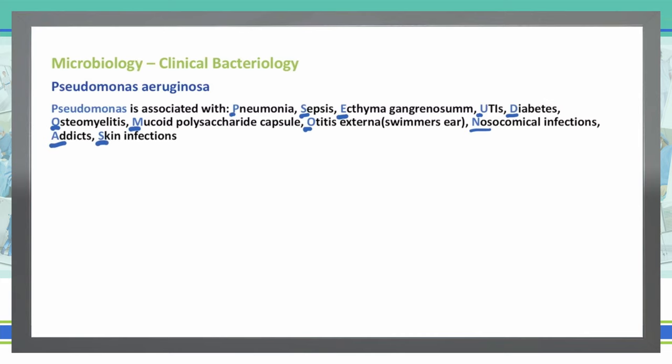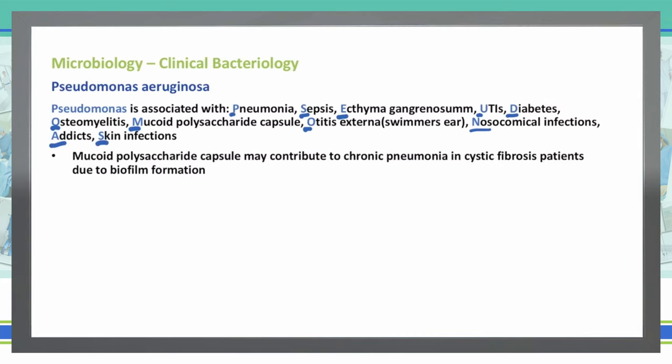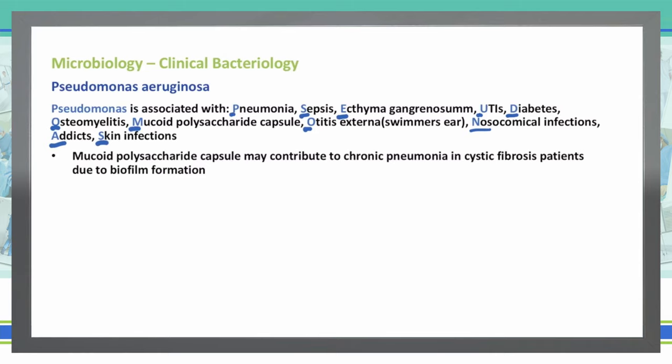Let's break down a couple of these specifically. The mucopolysaccharide capsule is what helps cause chronic pneumonia in patients that have cystic fibrosis because it actually forms a biofilm. That biofilm is very difficult to get rid of, and that's where we can have chronic pneumonia. Even though we can give antibiotics and kill some of that bacteria, that biofilm is much more difficult to eliminate.